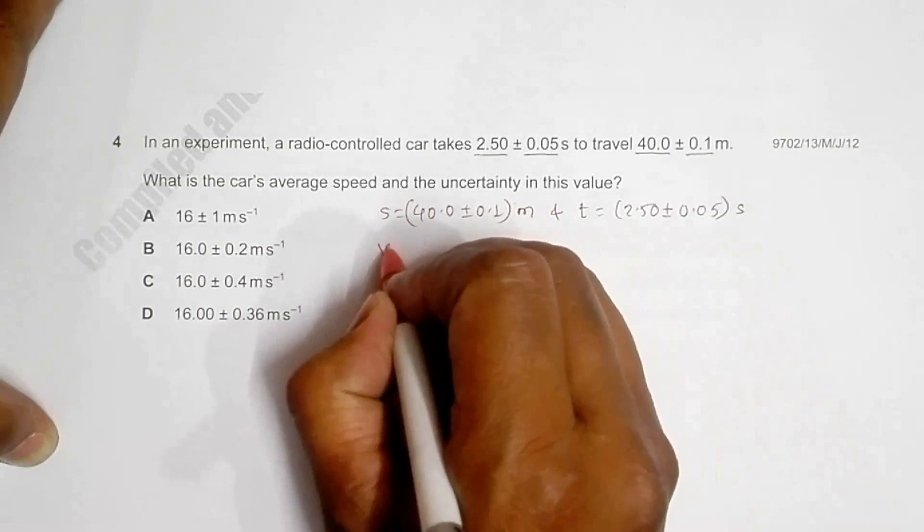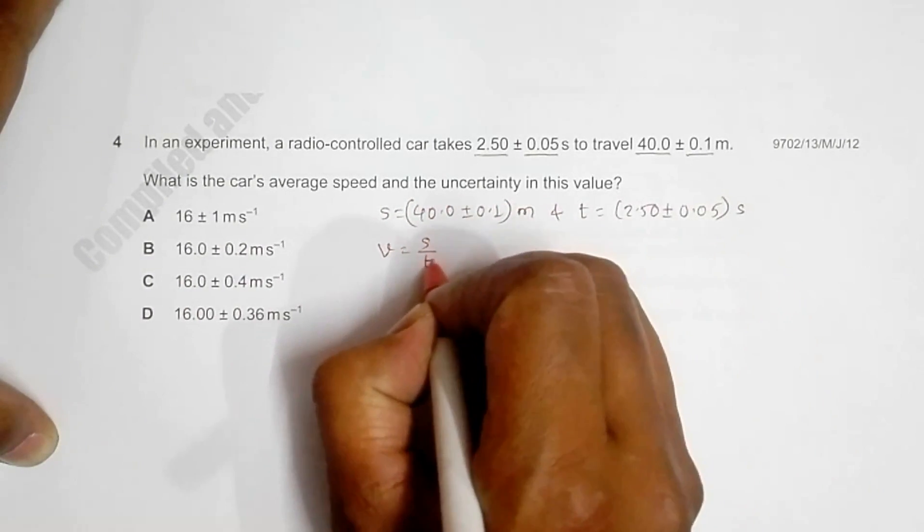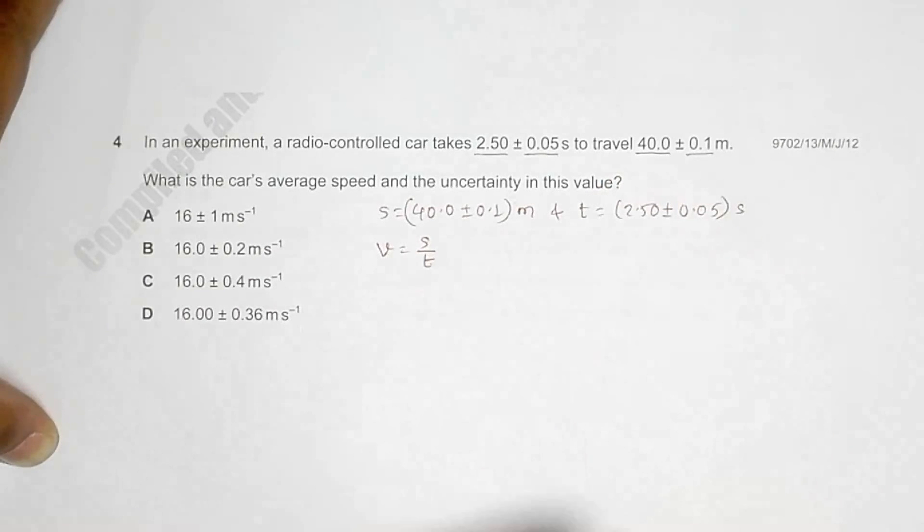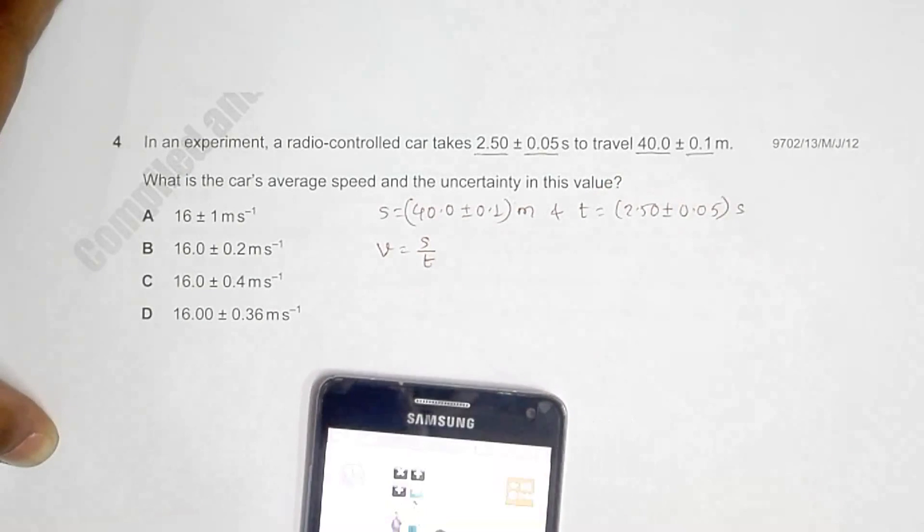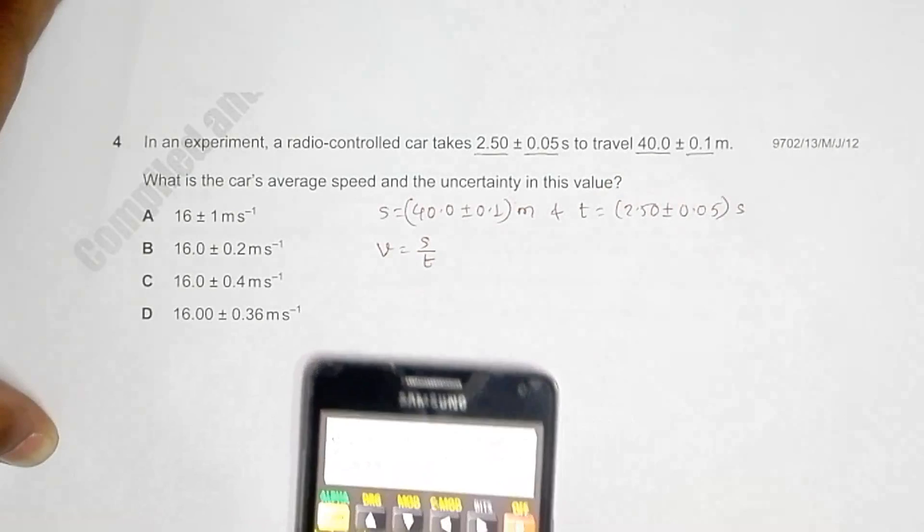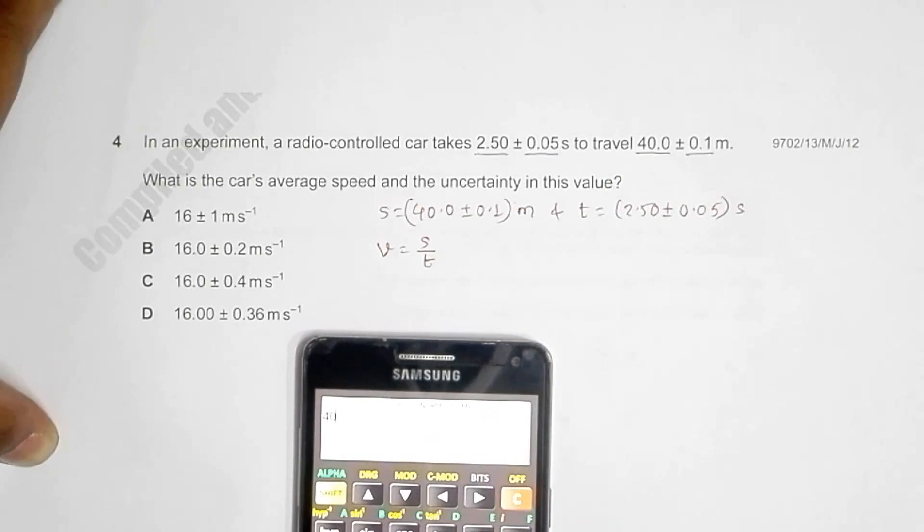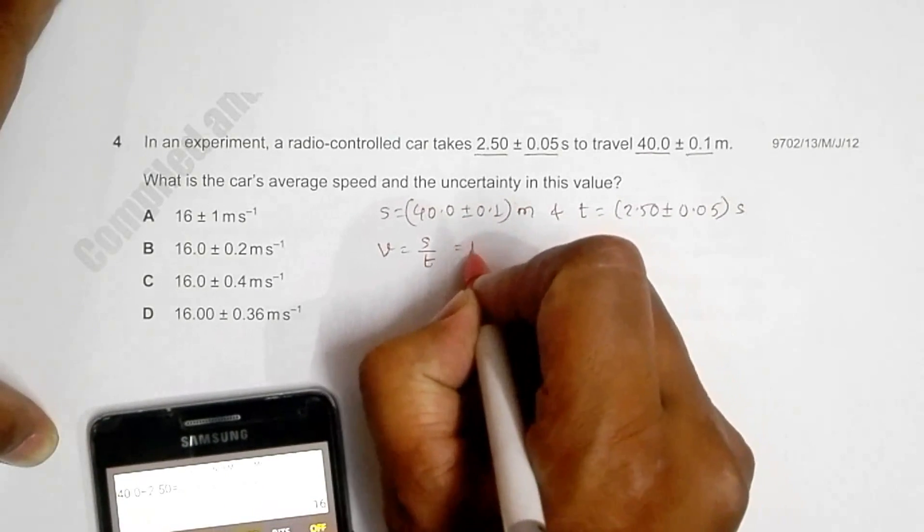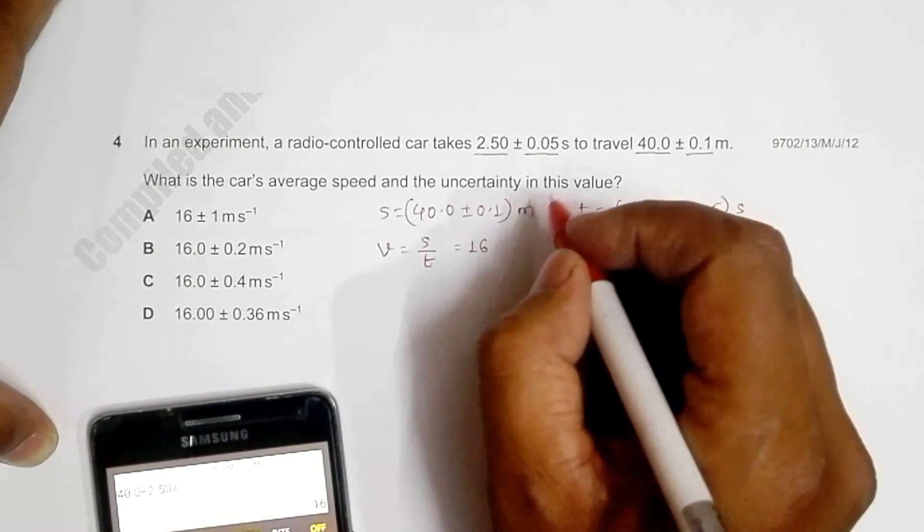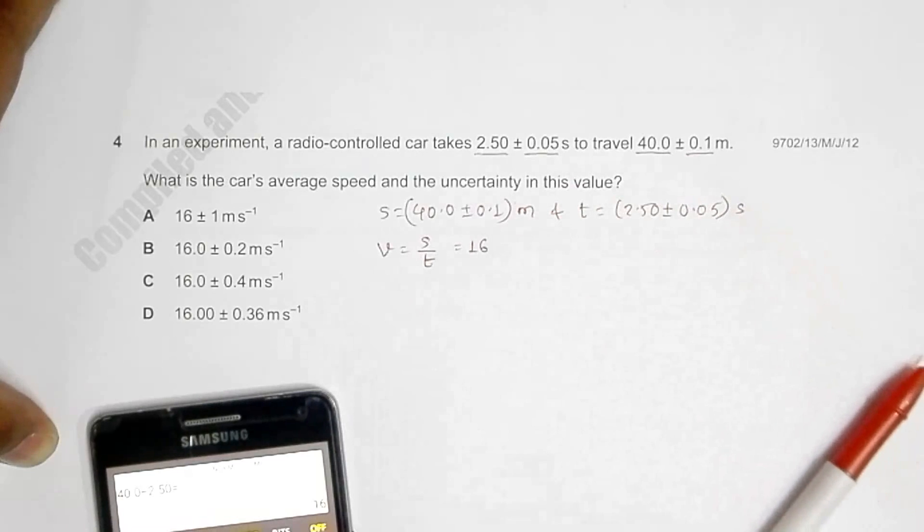First, the average speed will be V = s/t, considering this is uniform velocity. The value will be 40.0 divided by 2.50, which equals 16 meters per second. Since we have 3 significant figures in the calculations, I have to use 16.0 meters per second.